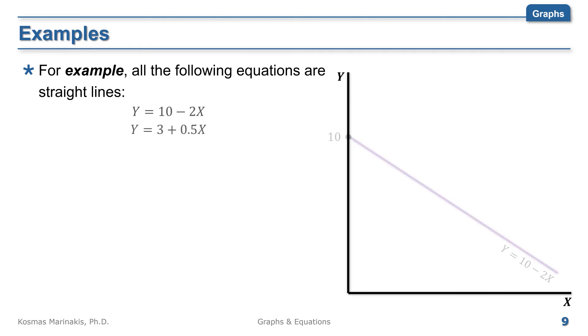y equals 3 plus 0.5 times x. With a positive intercept of 3 and a positive slope of 0.5, this line should start from 3 on the vertical axis and keep increasing by half a unit for every 1 unit increase in x.